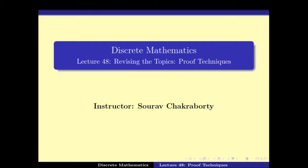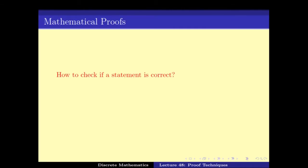The basic idea of proof techniques starts from the fact that we want to check whether a statement is correct or not. For example, say n square minus n plus 41 is a prime. Is this statement true or not? Now, there are two ways of solving this problem.